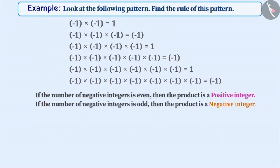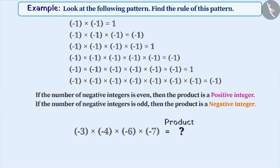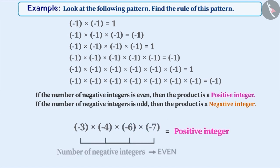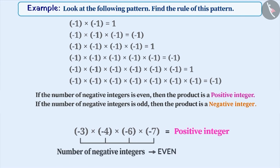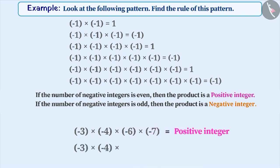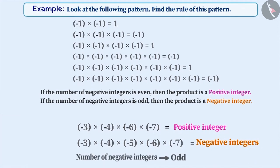Using this rule, you can find the sign of the product without actually carrying out multiplication. The product of minus 3 into minus 4 into minus 6 into minus 7 is a positive integer because the number of negative integers is even. Similarly, the product of minus 3 into minus 4 into minus 5 into minus 6 into minus 7 will be negative because the number of negative integers is odd.